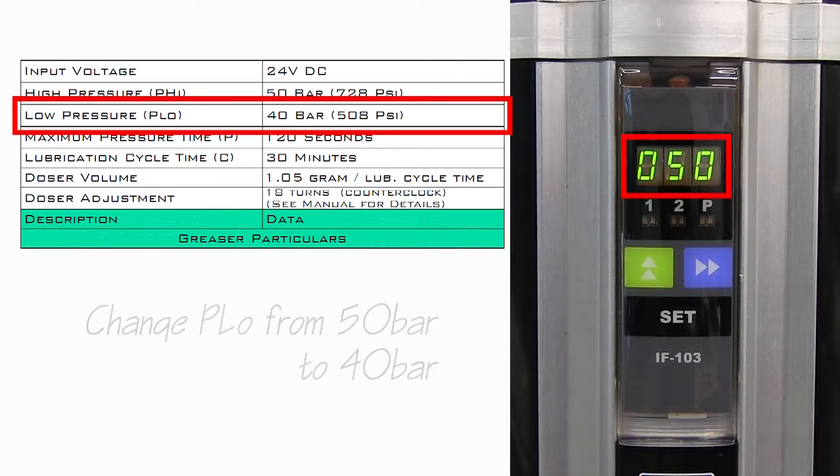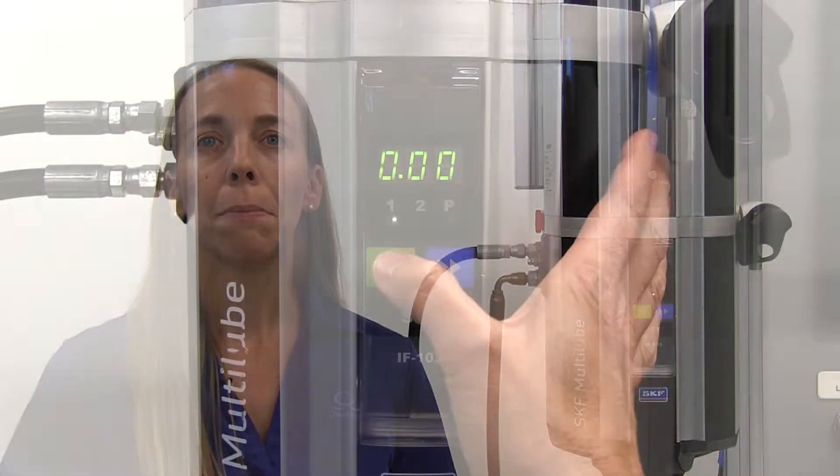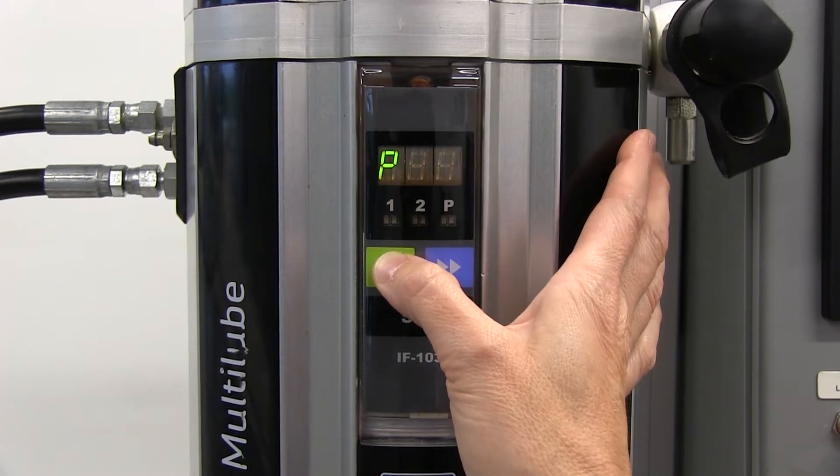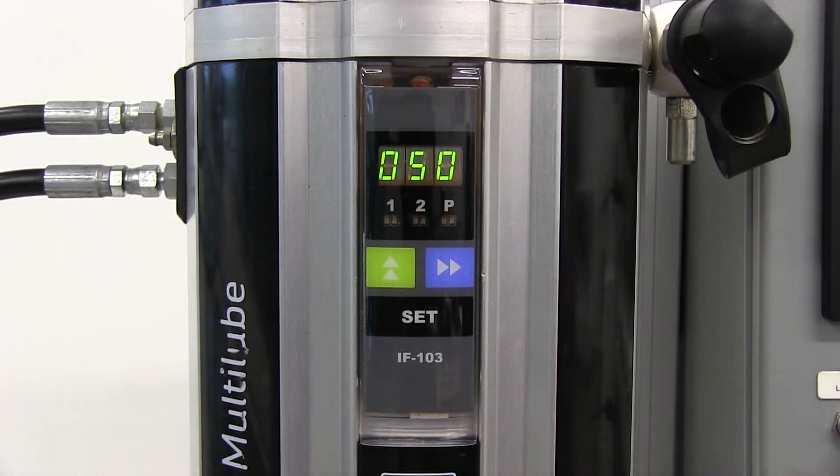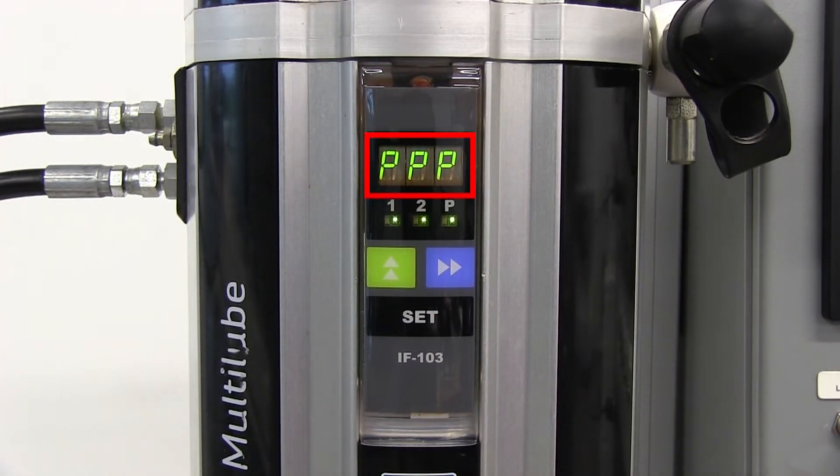Make note of any changes needed. To enter programming mode, be sure to stop navigating through the display when any one of the standard parameters is displayed. Then press the set button. The letters PPP will appear on the display, indicating that parameter adjustment is password controlled.